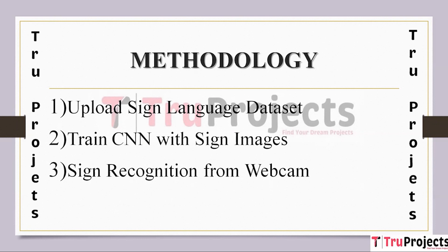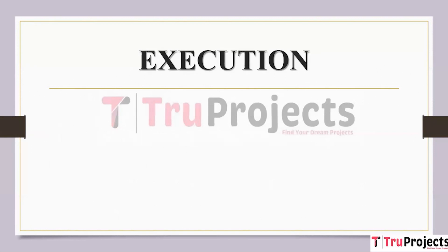The third module is sign recognition from the webcam. This module involves using the trained CNN model to recognize hand signs in real time using a webcam. The steps are: webcam input, pre-processing, inference, post-processing, and display.